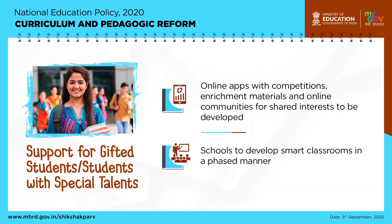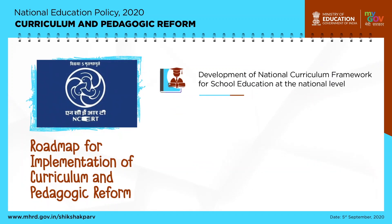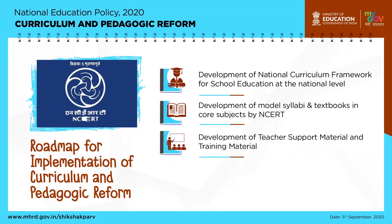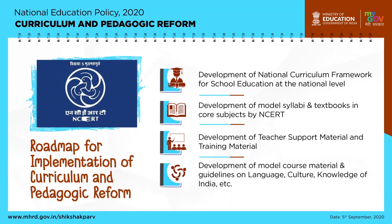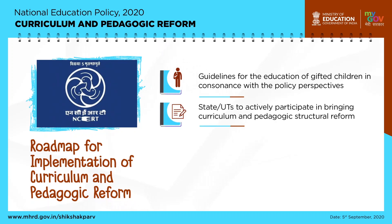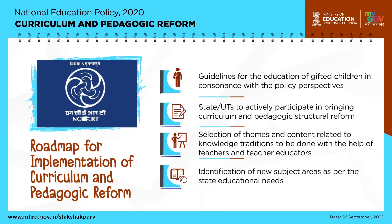Schools are to develop smart classrooms in a phased manner. The roadmap for implementation of curriculum and pedagogic reform includes: development of the National Curriculum Framework for School Education at the national level; development of model syllabi and textbooks in core subjects by NCERT; development of teacher support and training material; development of model course material and guidelines on language, culture, and knowledge of India; and guidelines for the education of gifted children. States and UTs are to actively participate in bringing curriculum and pedagogic structural reform, including selection of themes related to knowledge traditions and identification of new subject areas as per state educational needs.